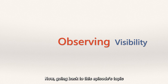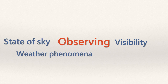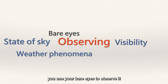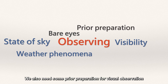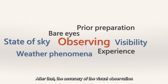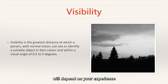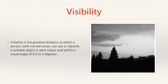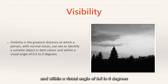Now, going back to this episode's topic: visual visibility observation. It is similar to the observation of cloud or weather — you use your bare eyes to observe it. So if you are short-sighted or long-sighted, you should wear a pair of glasses that fits you. We also need some prior preparation for visual observation, such as some landmarks, and the accuracy of the visual observation will depend on your experience. Visibility is the greatest distance at which a person with normal vision can see or identify a suitable object — an object in dark color and within a visual angle of 0.5 to 5 degrees.